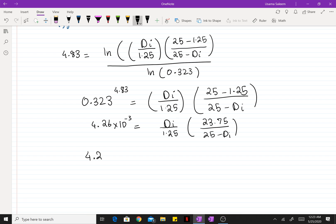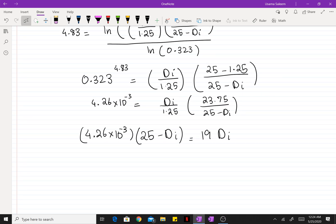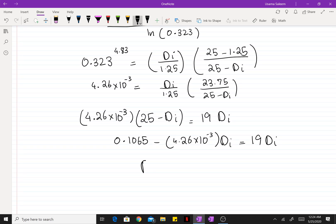Now I'm just doing some algebra, cranking out the calculations. Who thought you would have to do math in engineering, am I right? Just working through the numbers, rearranging to get 0.1065 equals 4.26 times 10 to the negative 3 times DI plus 19 DI.